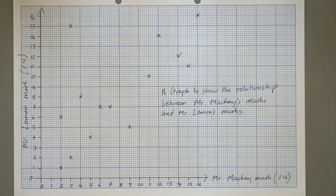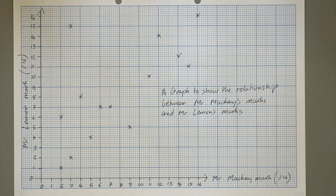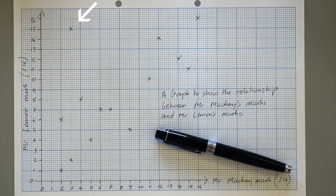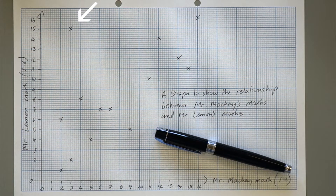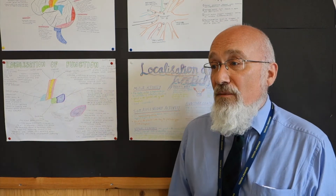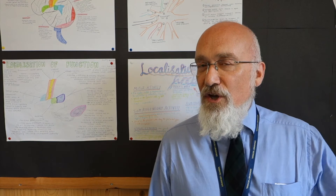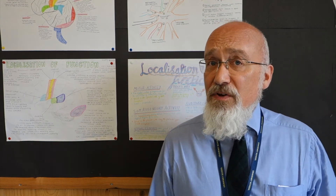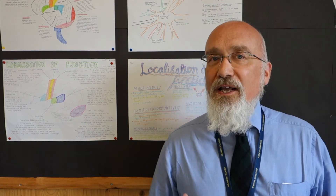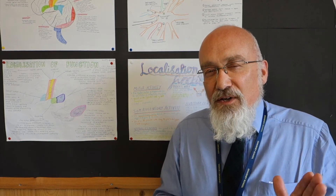We can see that although there are some disagreements, there is broadly a high degree of agreement between myself and Mr. Lemon, because the scattergram is showing a strong positive correlation. What about this student here? Mr. Lemon has given this one 15 out of 16 and I've given them 3 out of 16. Maybe they gave Mr. Lemon some chocolates, or maybe they caught me on a bad day. This happens because we're human beings — we are subject to bias and subjectivity and are not completely objective. But using a scattergram allows us to get to the bottom of the reliability between us.